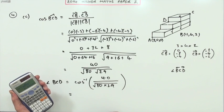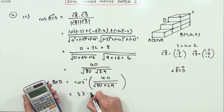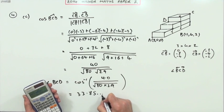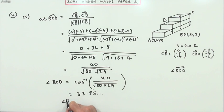And I've got 33.85 etc. degrees, so I'll just say angle BCD is 33.9 degrees. And I imagine there'll be lots of variations in that for the markers to sort their way through.